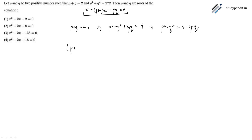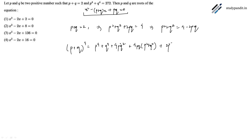Now we expand (p plus q) raised to the power 4, which equals p raised to the power 4 plus q raised to the power 4 plus 4 times p squared q squared plus 2p squared q squared.